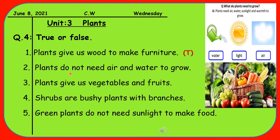Sentence two is: Plants do not need air and water to grow. We have learned that there are four to five things very much needed for a plant to grow — good soil, air, water, and sunlight. So the statement that plants do not need air and water is not true. It is false. Write F.